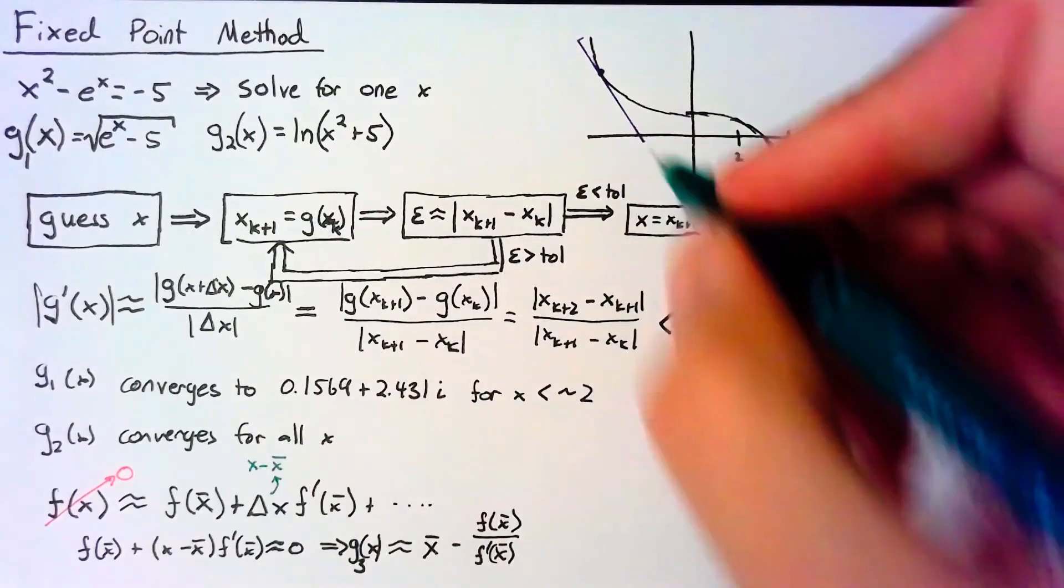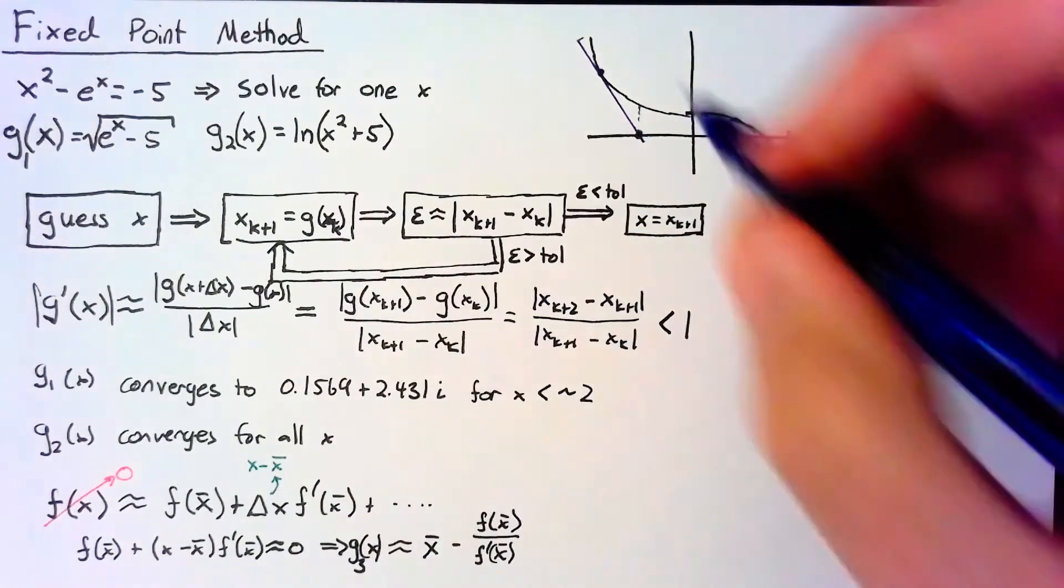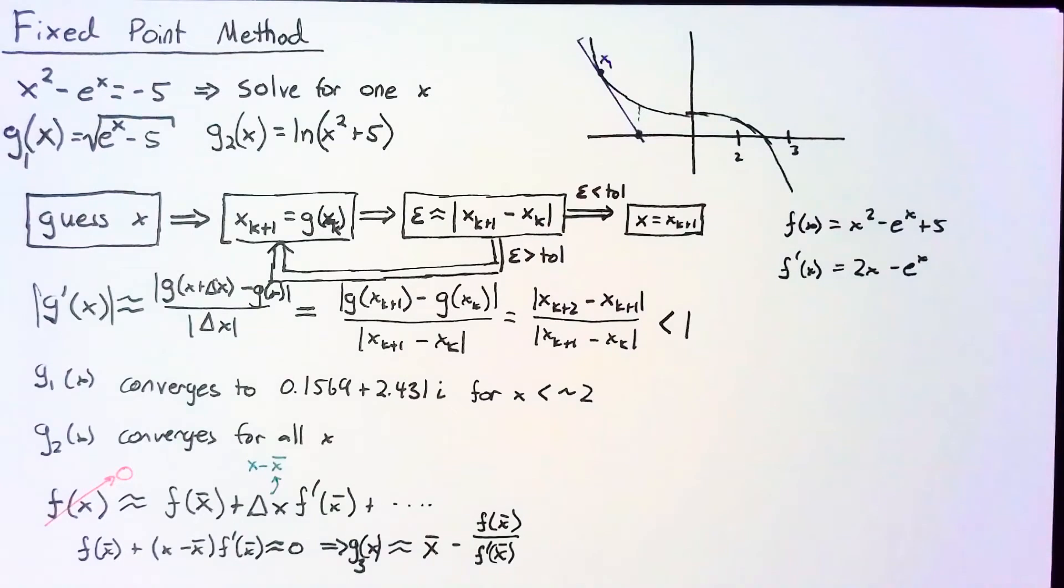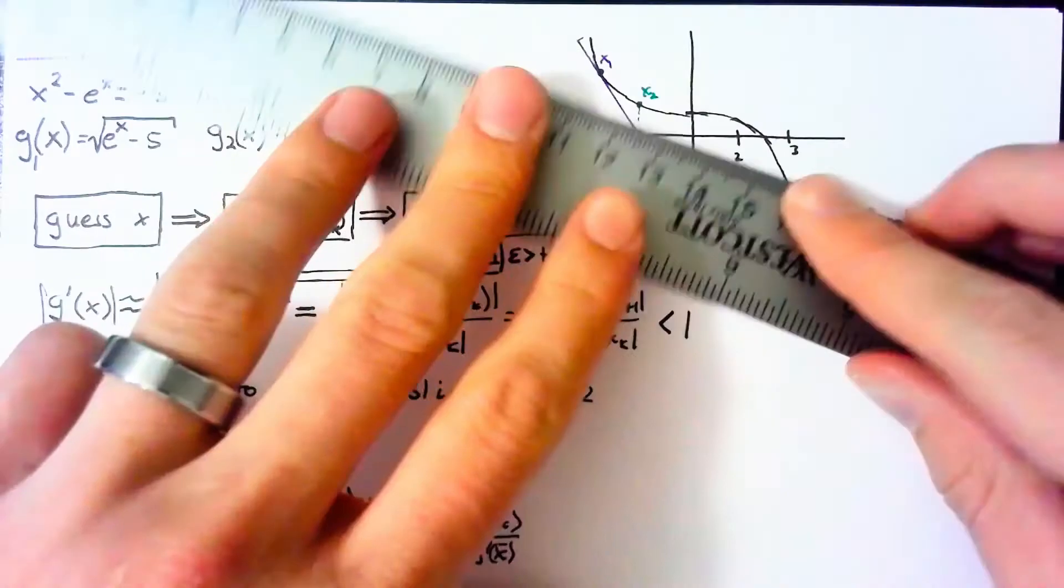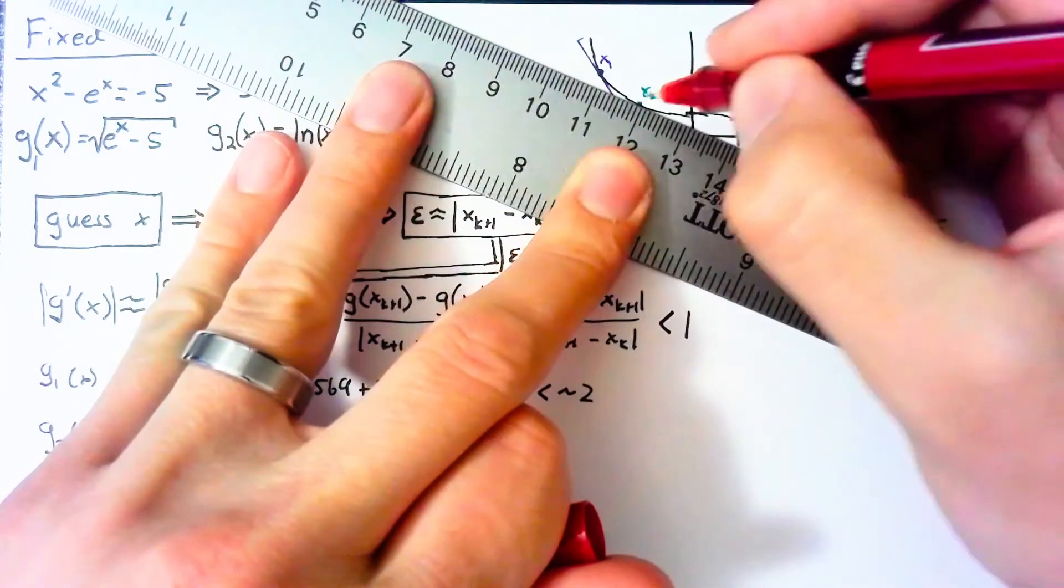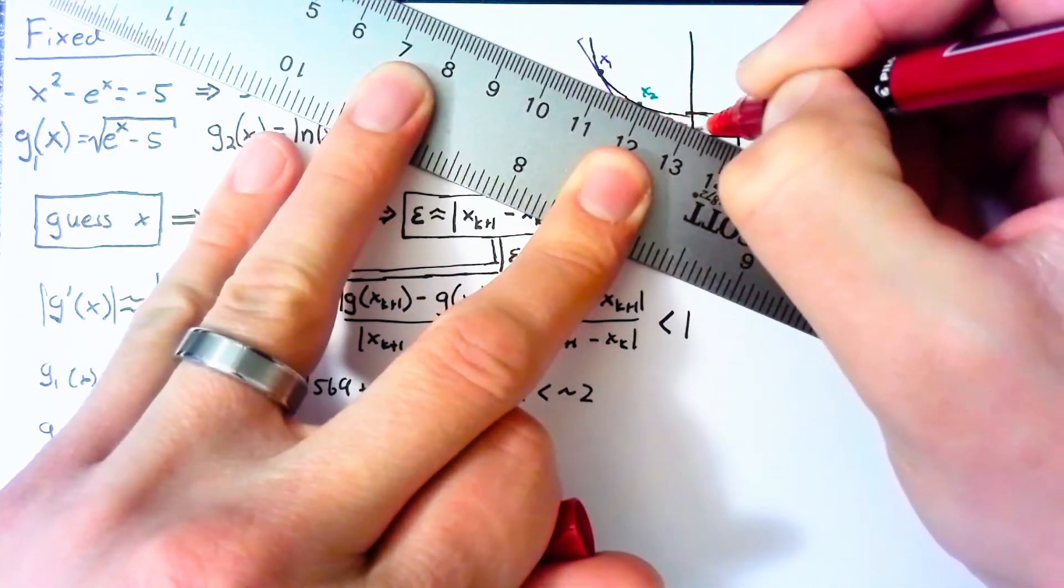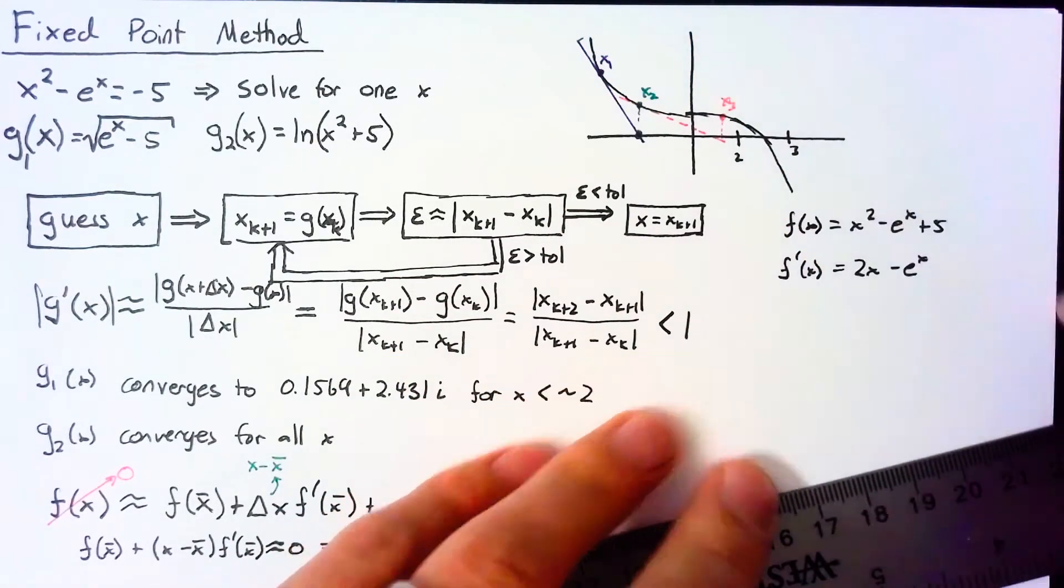So we're going to take that value as our next guess. So if this is our x₁, this value here will be our x₂. And we'll run through that process again, calculate our x' value, run that slope out until it hits the x-axis. And this point right here is going to be our x₃.